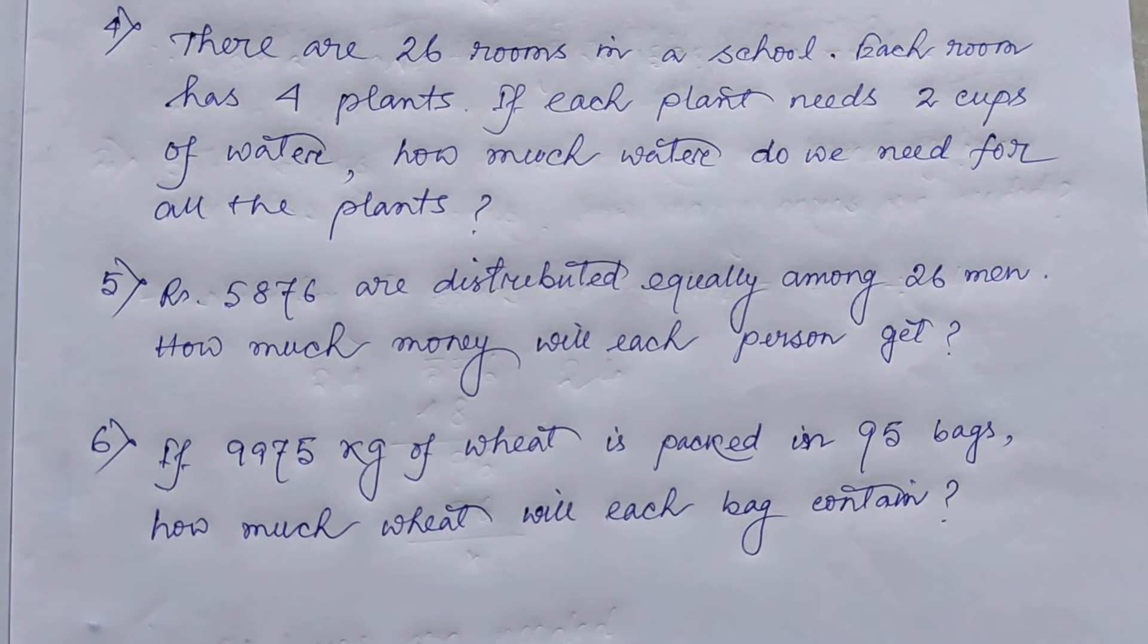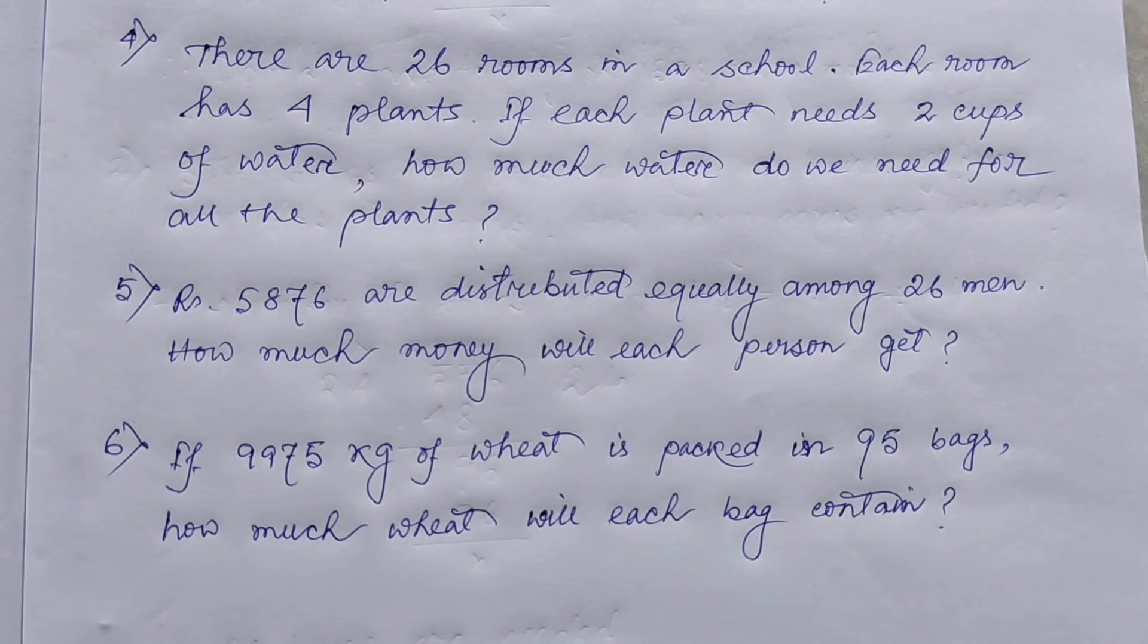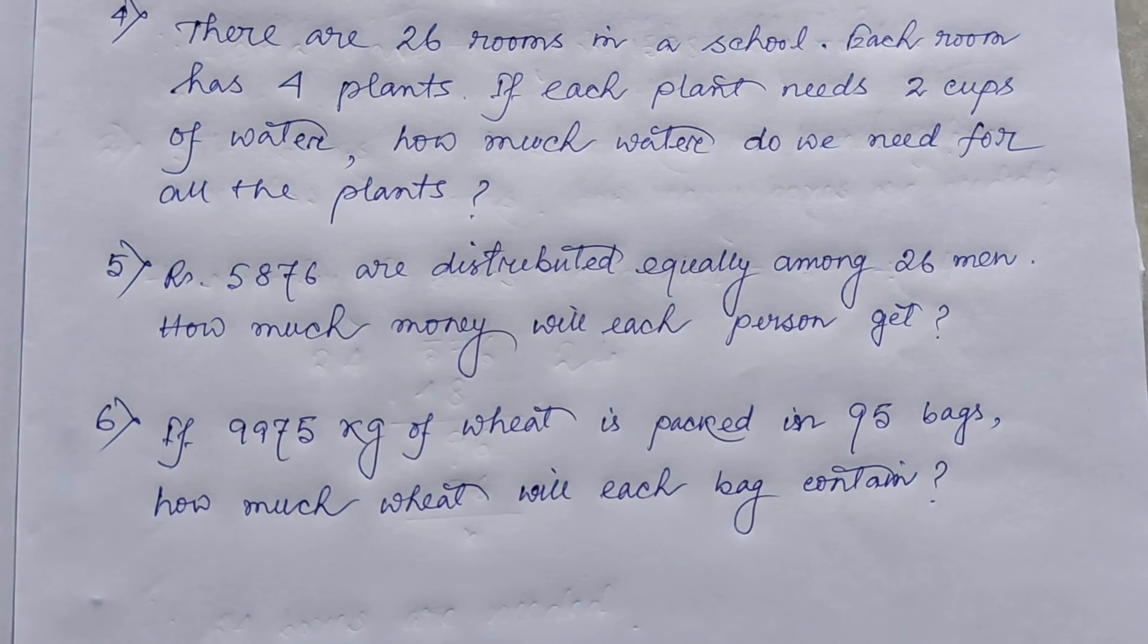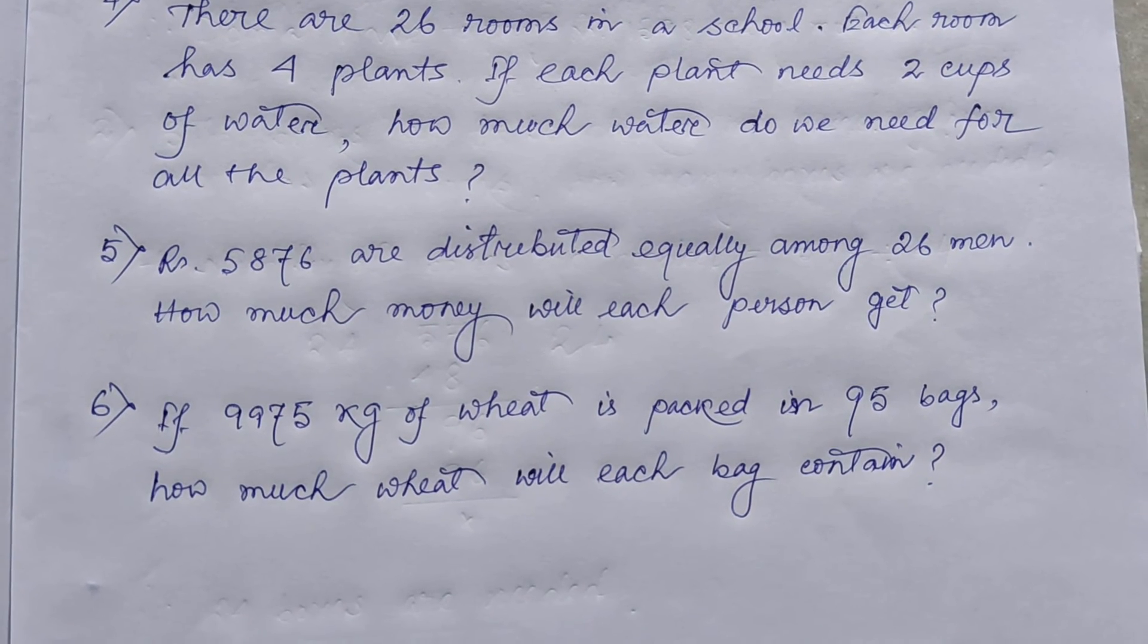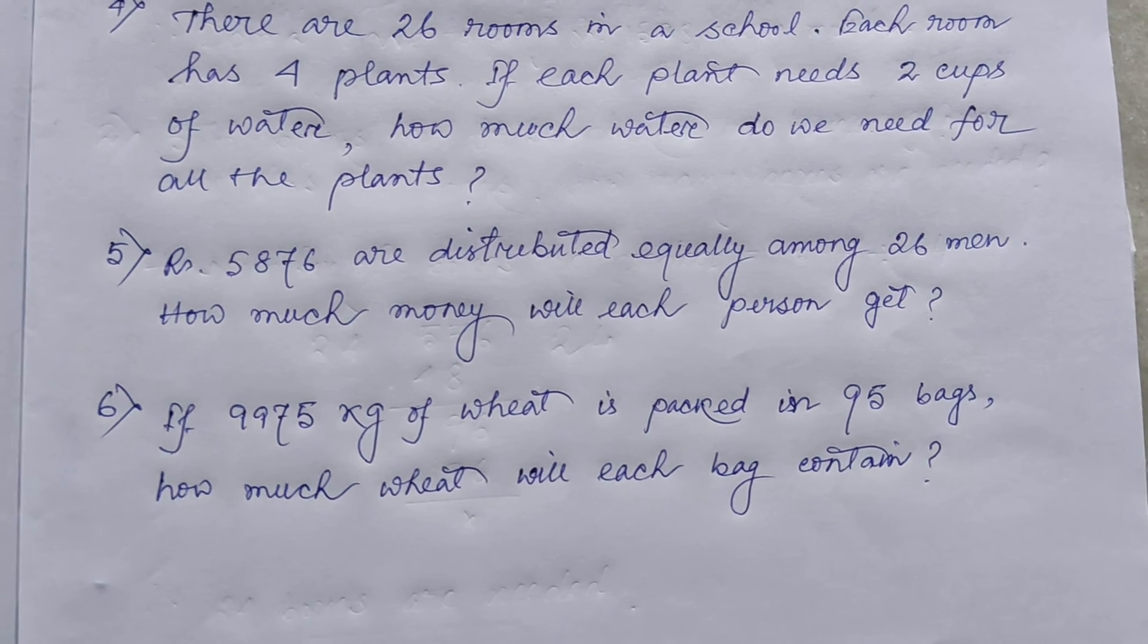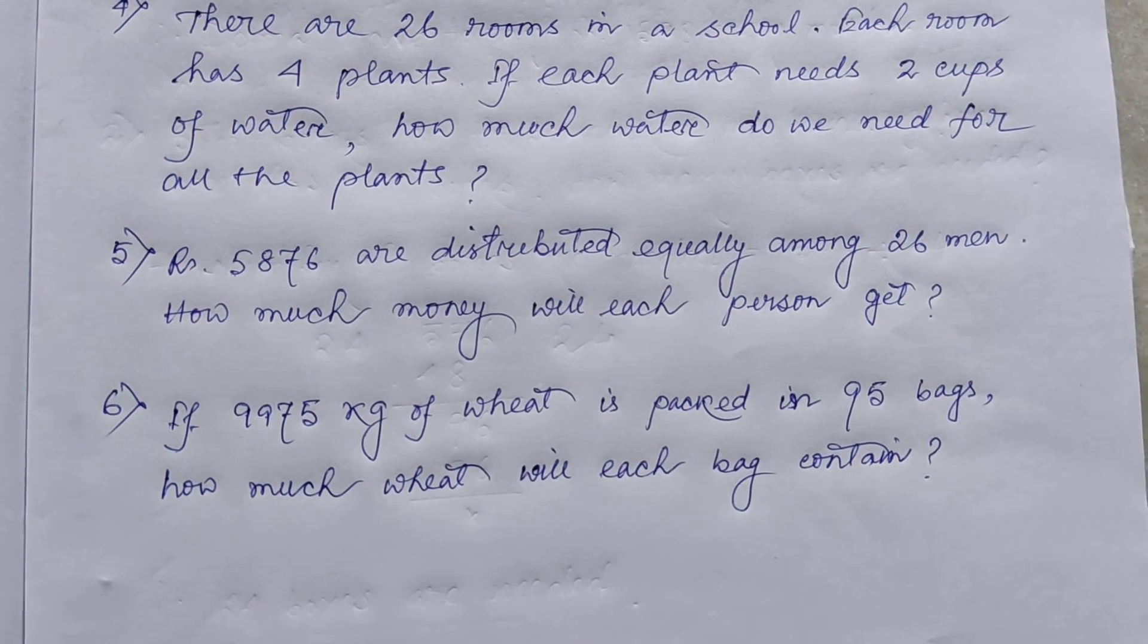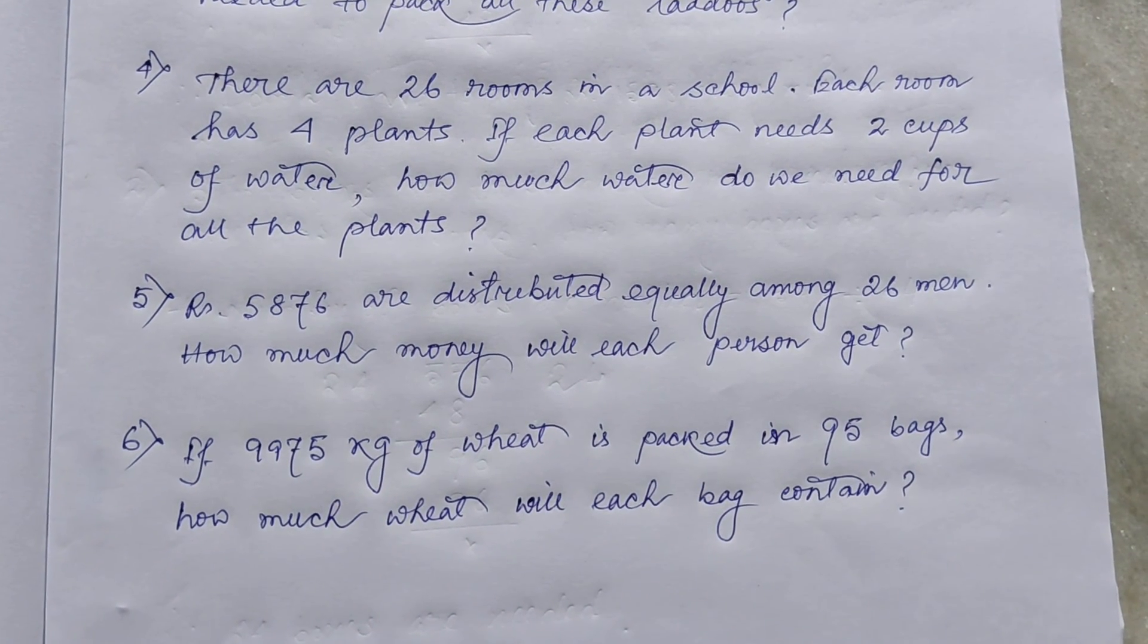Next number 5. Rupees 5876 are distributed equally among 26 men. How much money will each person get? Number 6. If 9975 kg of wheat is packed in 95 bags, how much wheat will each bag contain? So, this homework you do in your classwork copy.